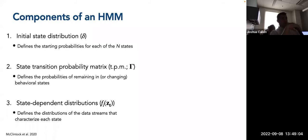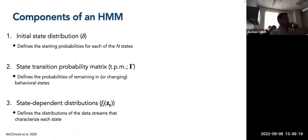The second component is the state transition probability matrix (TPM), often abbreviated as gamma (bold capital Γ), which defines the probabilities of remaining in or changing behavioral states. It's analogous to the alpha matrix in state space models. For two states it's a 2×2 matrix; for three states a 3×3 matrix — always a square matrix of dimensions equal to the number of states. Gamma_ij is the probability of switching from state j to state i; gamma_11 is staying in state 1, gamma_22 staying in state 2, gamma_12 switching from state 2 to state 1, and gamma_21 switching from state 1 to state 2.